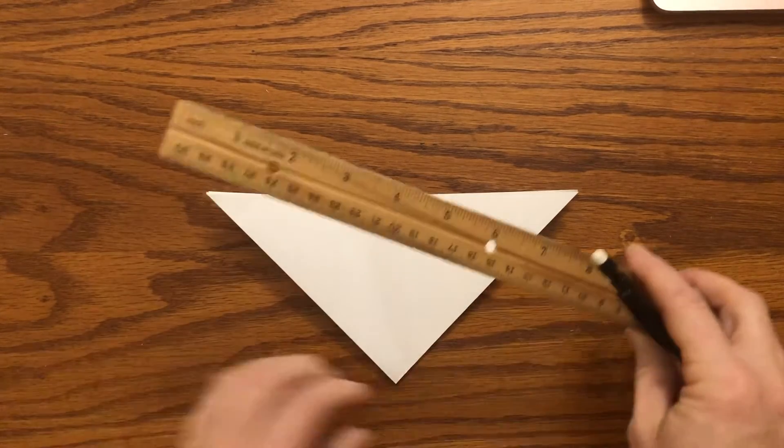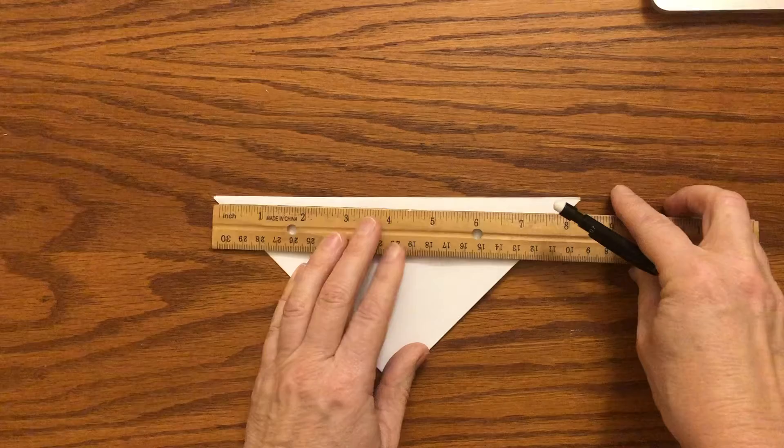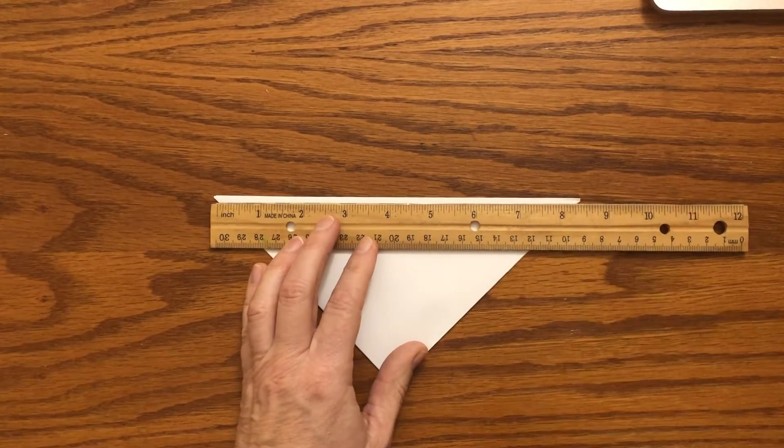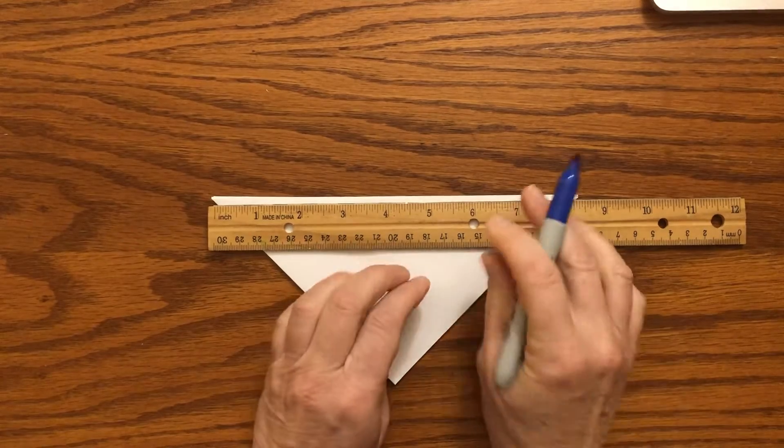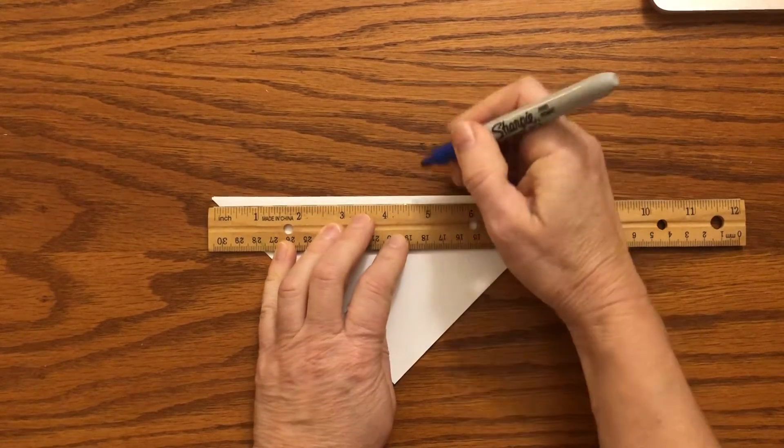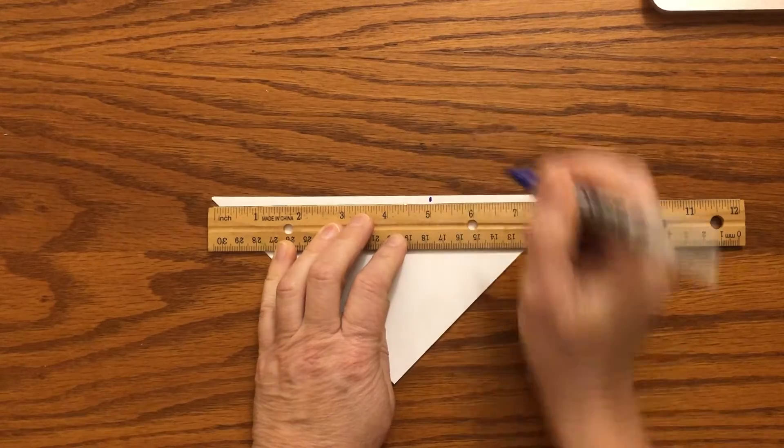is if you measure from the left-hand side over... and I'm gonna actually do this with my blue Sharpie so you can see. But I'm gonna measure to about where the five is on my ruler, just as a good reference. I would do it in pencil on yours.